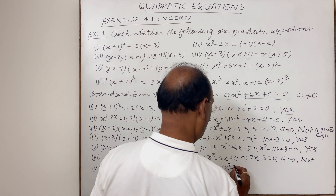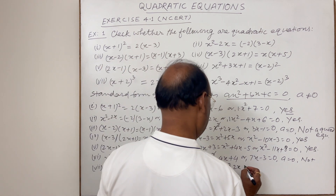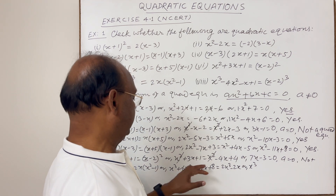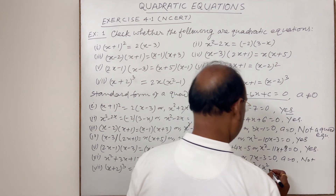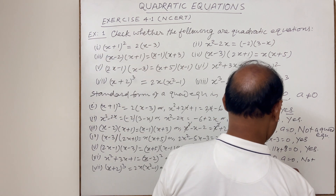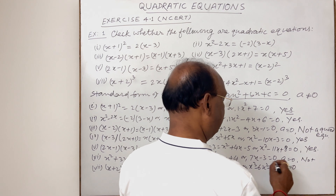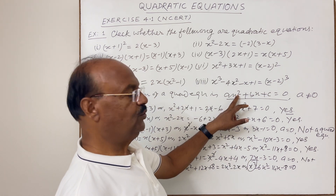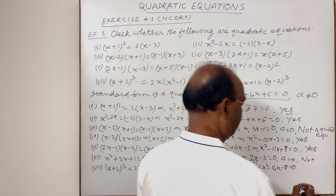Transposing all terms to one side: 2x³ − x³ = x³, then −6x², −2x − 12x = −14x, and −8, giving x³ − 6x² − 14x − 8 = 0. The degree of this equation is 3 due to the x³ term. Since maximum power of the variable is 3, not 2, this is not a quadratic equation.